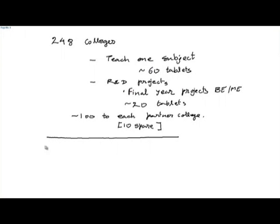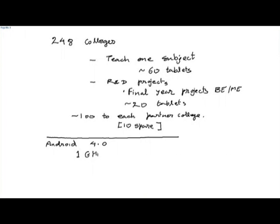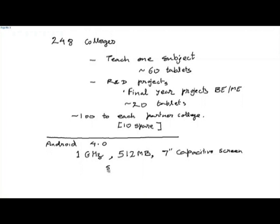These tablets currently run an operating system called Android, version 4.0. For the benefit of teachers learning about tablet computers for the first time, the Akash has a processor running at 1 gigahertz, 512 megabytes of RAM, and a 7-inch capacitive touch screen. It has a battery which should last for about 3 hours, an SD card slot, and a USB connector.